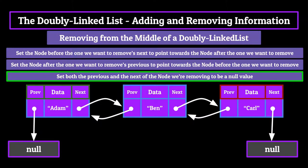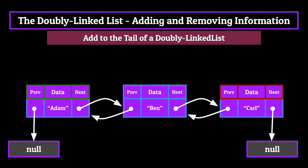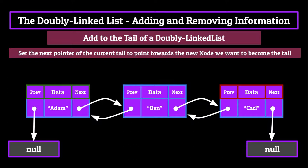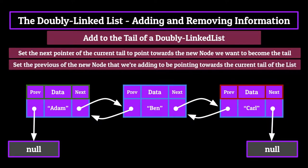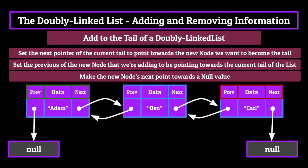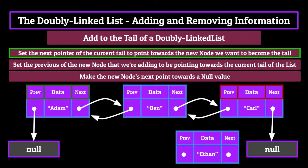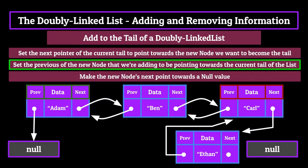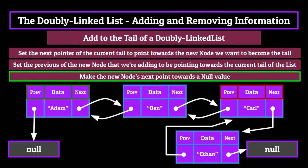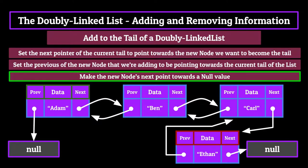Now we're going to talk about adding and removing from the tail. Adding a node to the tail is a three-step process. Step 1: set the next pointer of the current tail to point towards the new node. Step 2: set the previous of the new node to point towards the current tail. Step 3: make the new node's next point towards a null value. In our example, we want to add a node containing the string "ethan" — we set carl's next to ethan, ethan's previous to carl, and ethan's next to null. Ethan has been successfully added as the new tail.